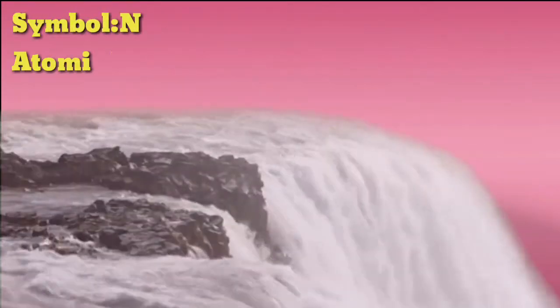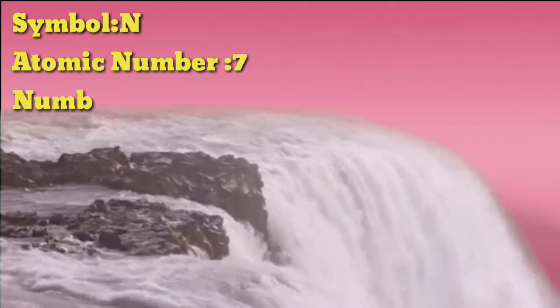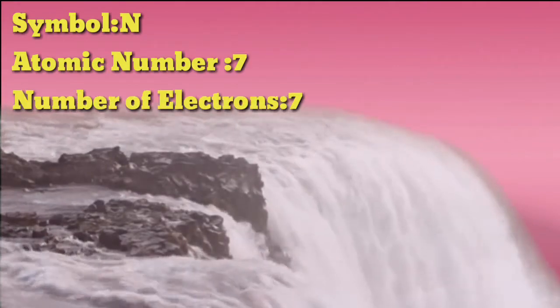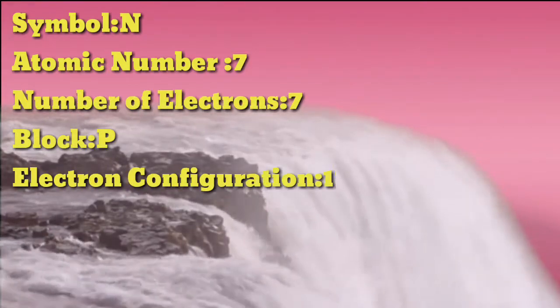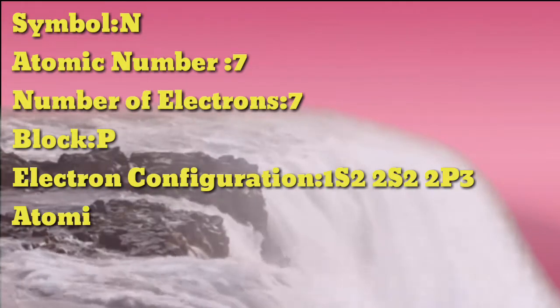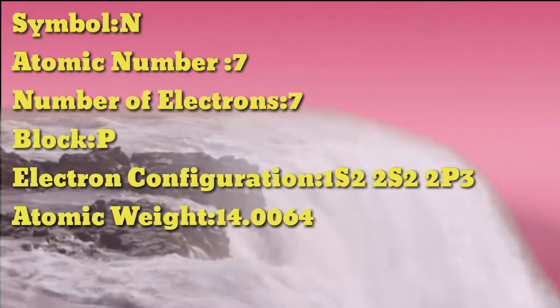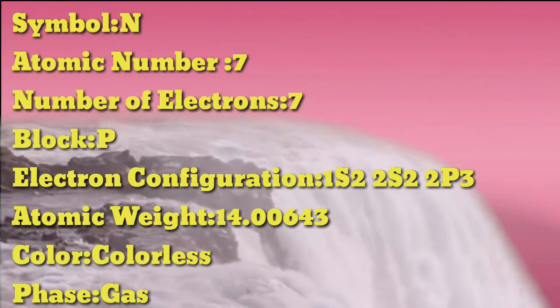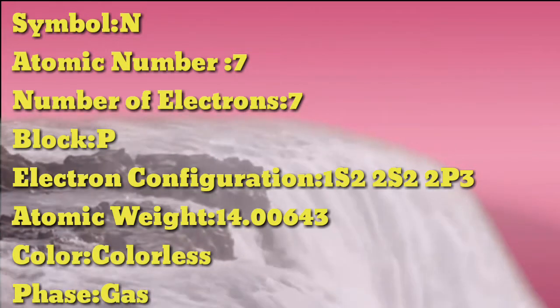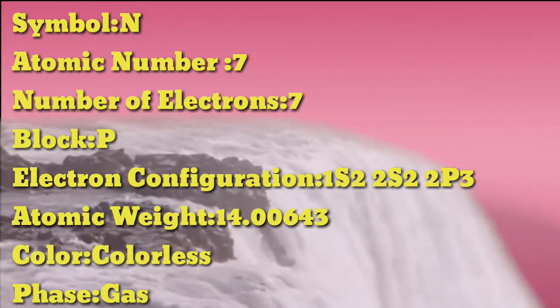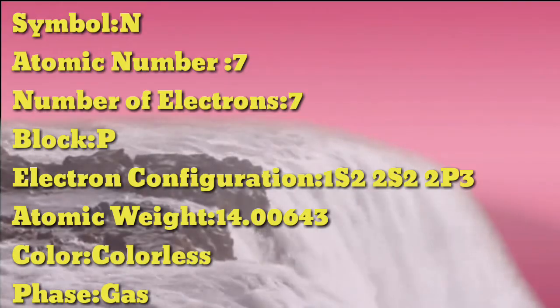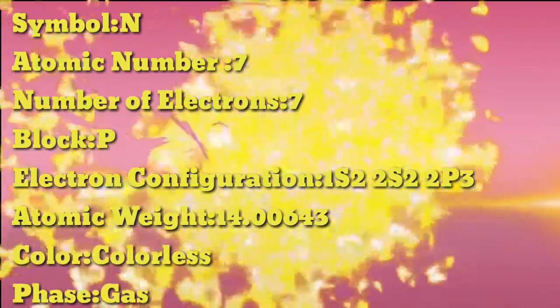Symbol: N. Atomic number: 7. Number of electrons: 7. Block: P. Electron configuration: 1s²2s²2p³. Atomic weight: 14.00643.